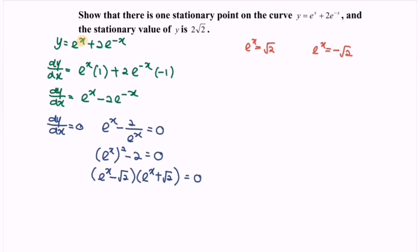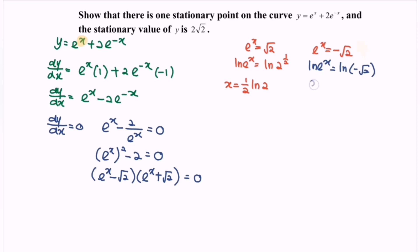To find the critical value of x, take the natural log of both sides. For e^x = √2: ln(e^x) = ln(2^(1/2)), so x = (1/2)ln 2. For e^x = −√2, taking the log of both sides is invalid because the argument of ln must be greater than 0, so this solution is rejected.